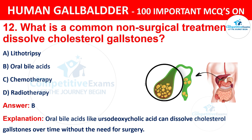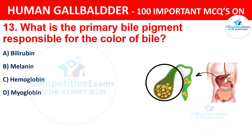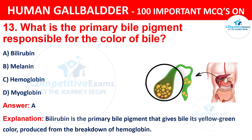Question 13: What is the primary bile pigment responsible for the color of bile? The options are: A) Bilirubin, B) Melanin, C) Hemoglobin, D) Myoglobin. The correct answer is A, i.e. bilirubin. Bilirubin is the primary bile pigment that gives bile its yellow-green color, produced from the breakdown of hemoglobin.